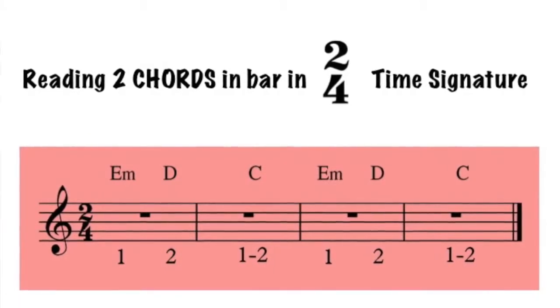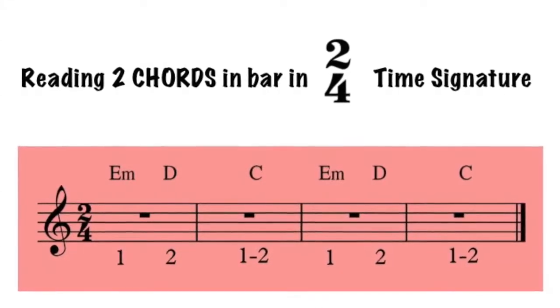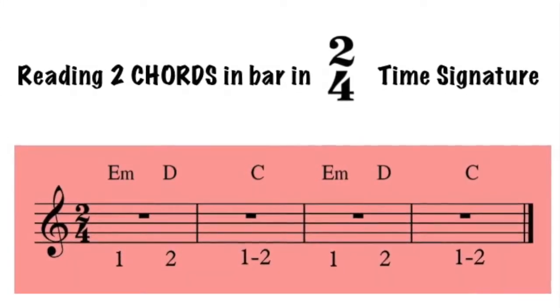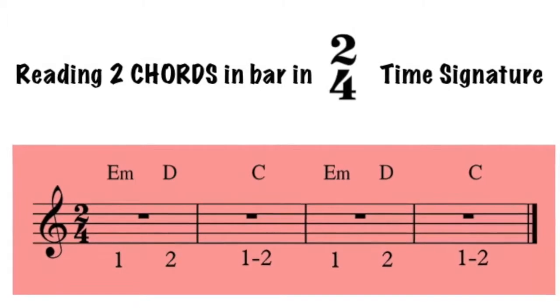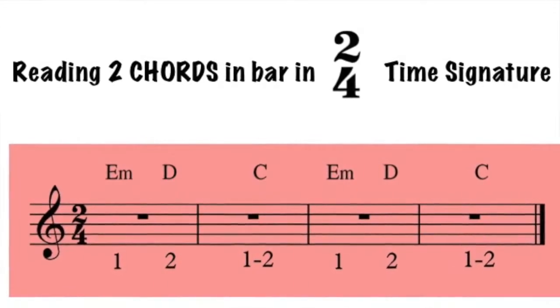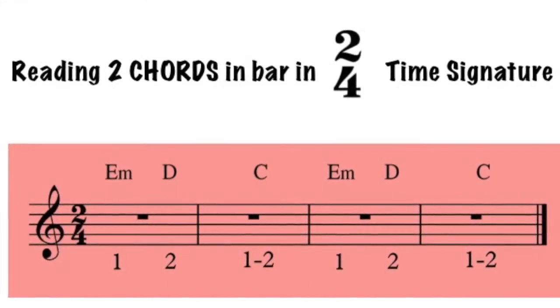The example shows that there are two chords in every bar. Simply divide each count evenly and play each chord for one count.